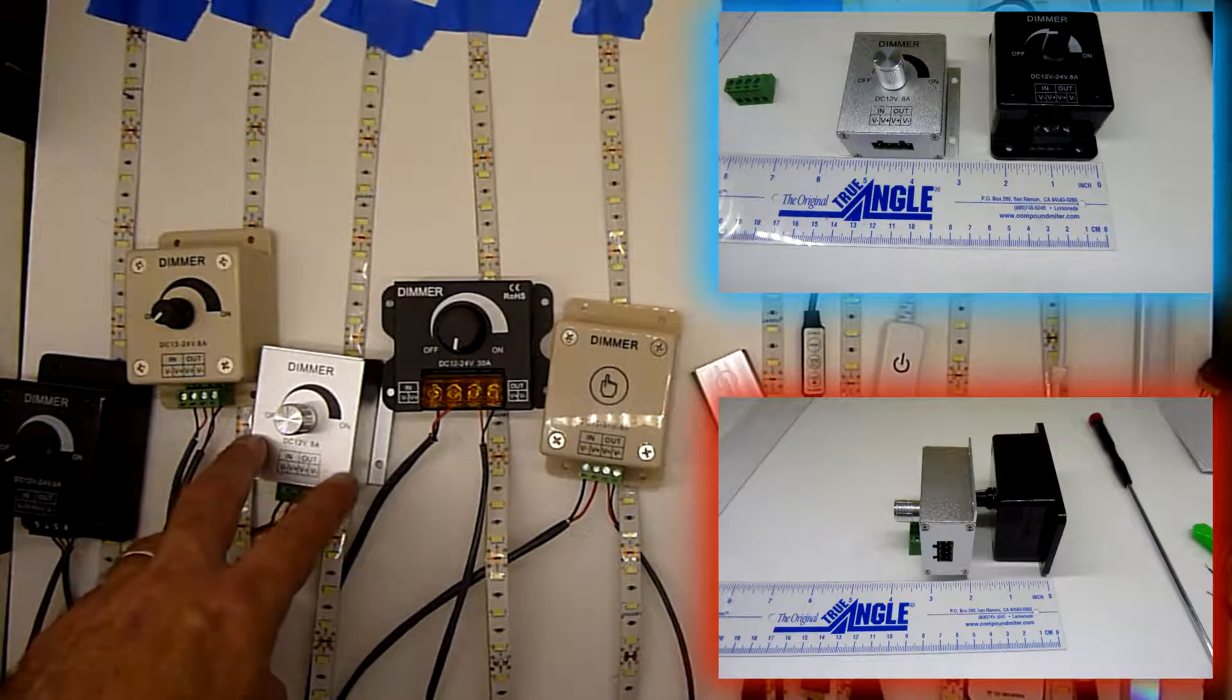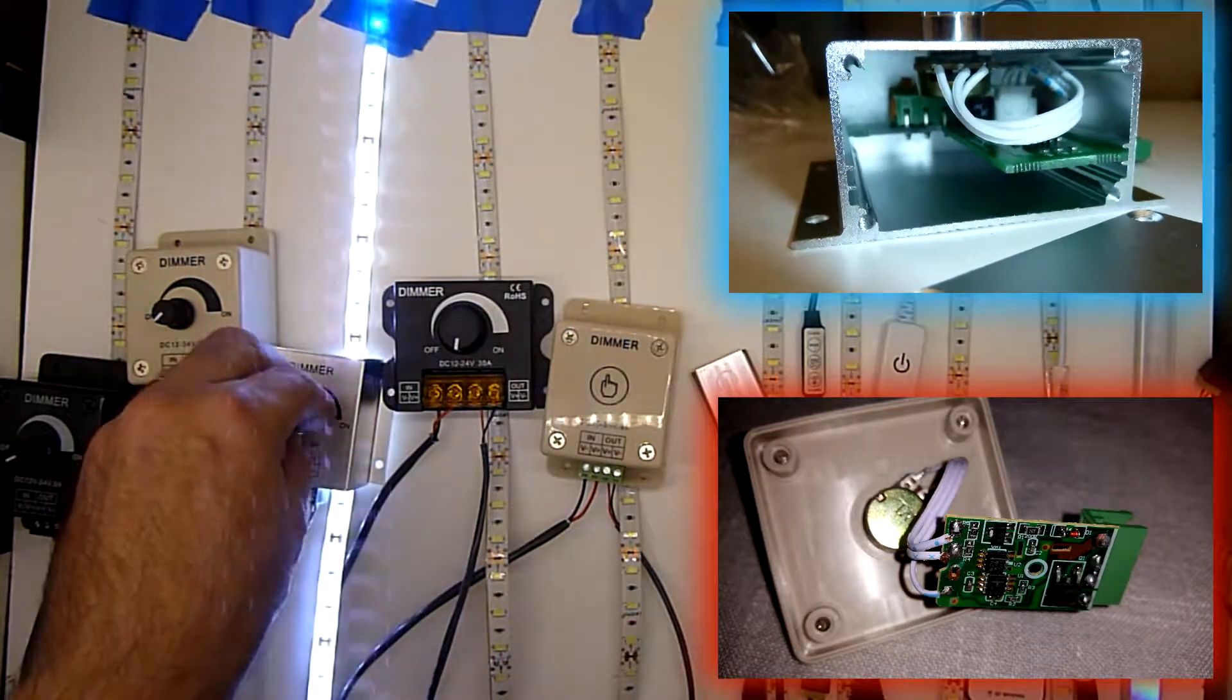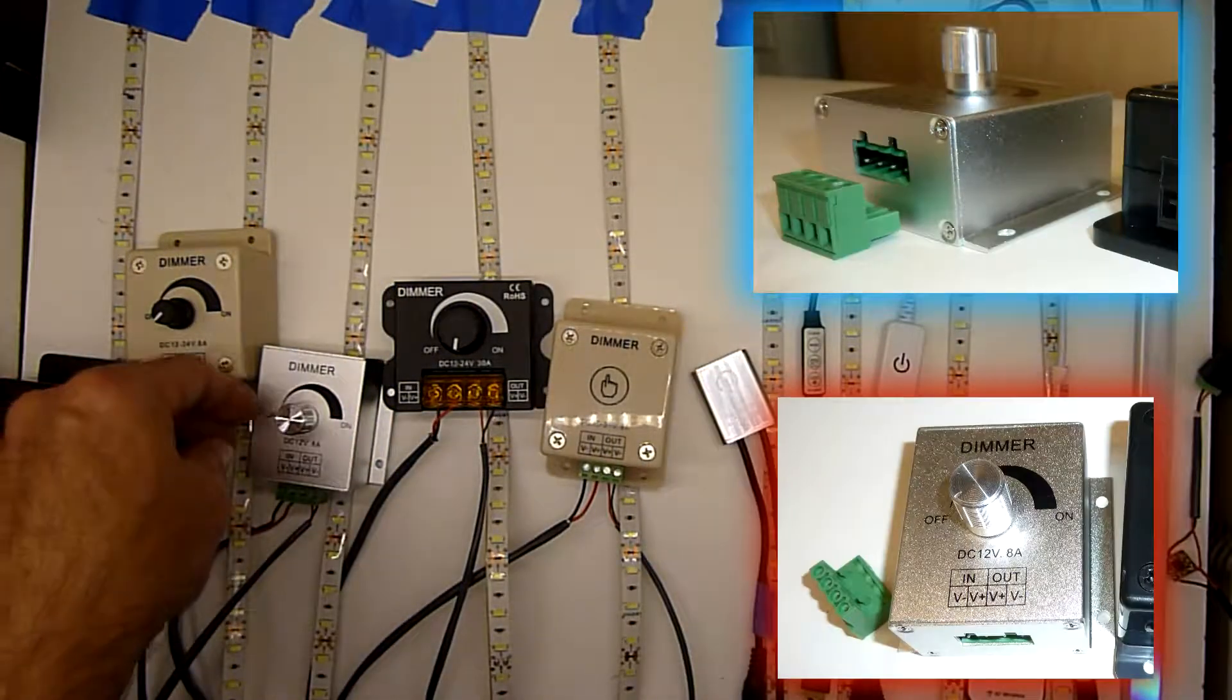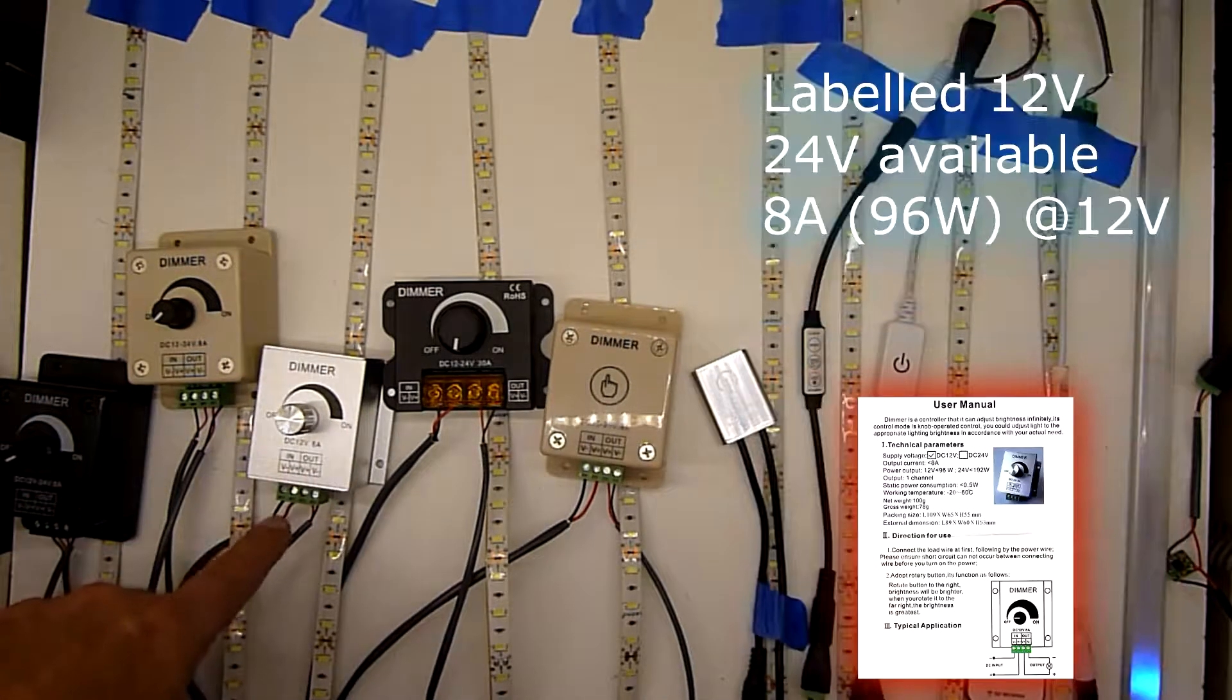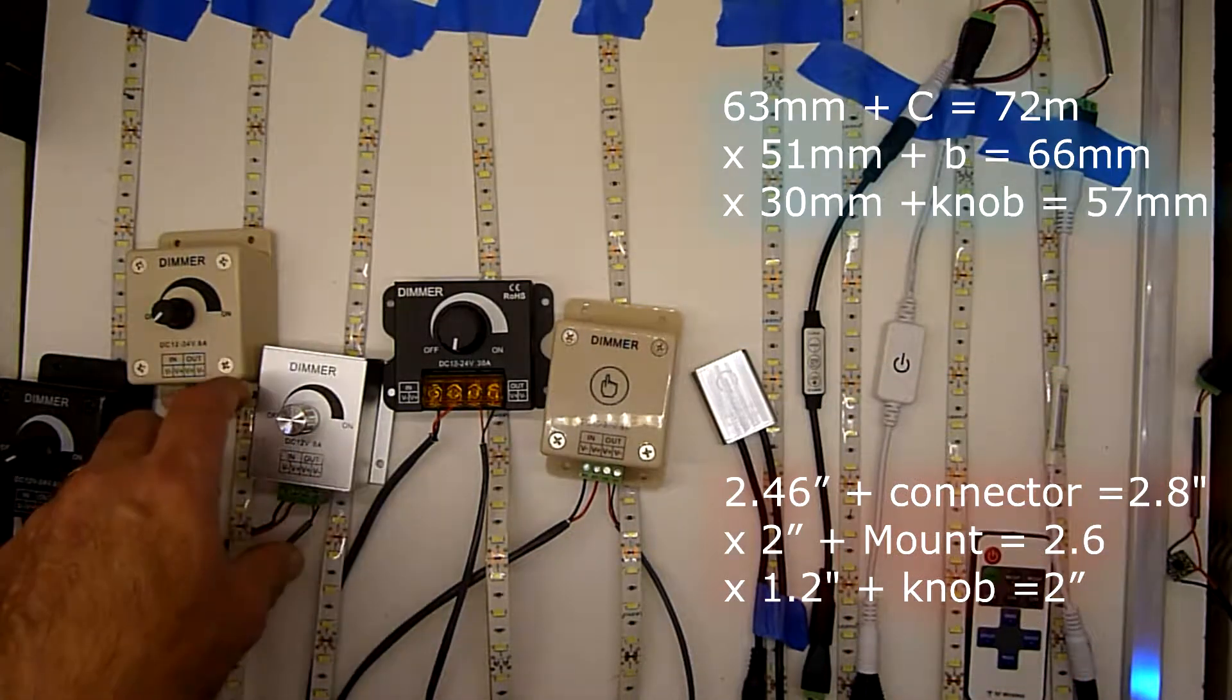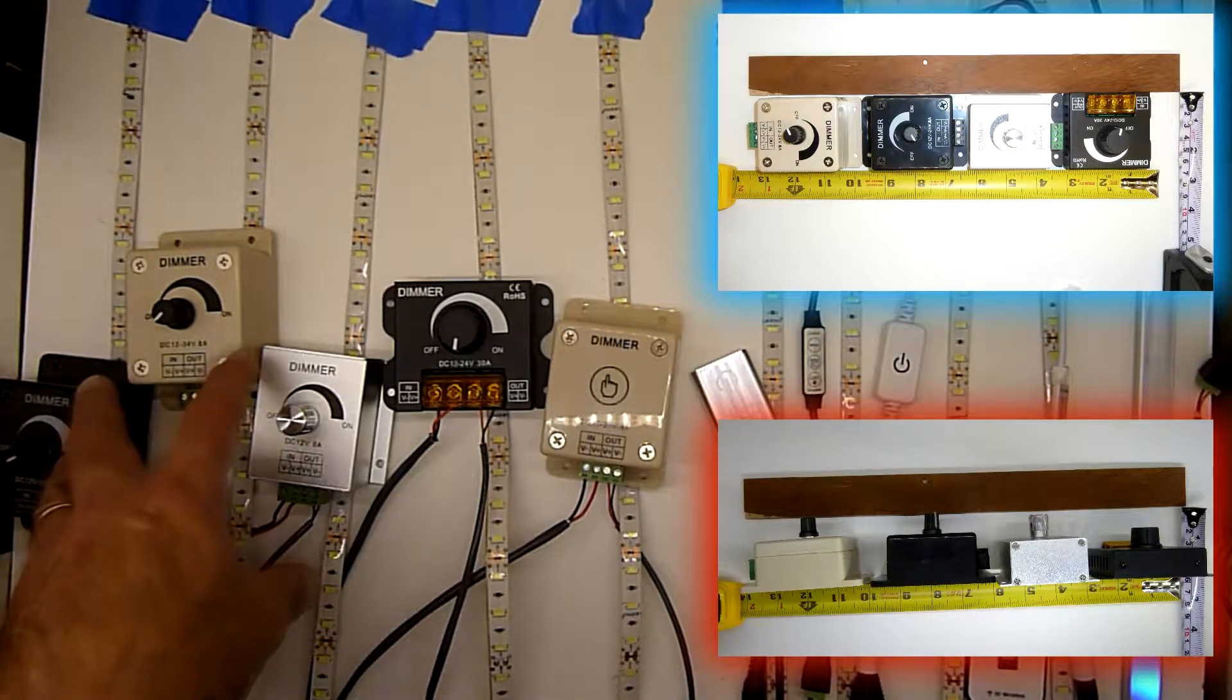This next box is an all-aluminum box. It's actually the same interior as these other two and has the same attributes in terms of cutoff. When it gets towards the bottom it does drop right off. However, it has a beautiful finish to it, a nice machine knob here. It's clearly labeled on the front, has the drawdown connectors. It is a little narrower than the others, but height-wise and length front to back it is about the same.